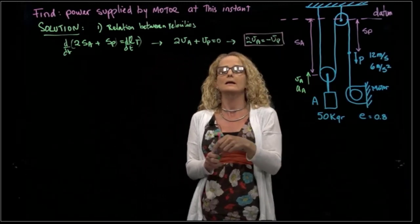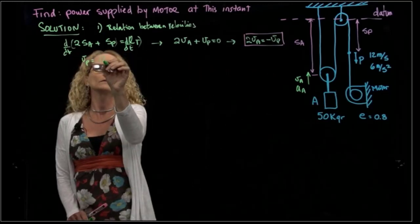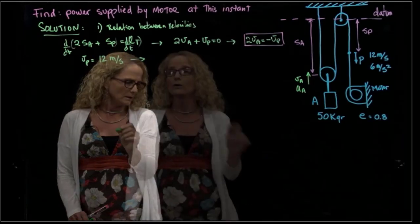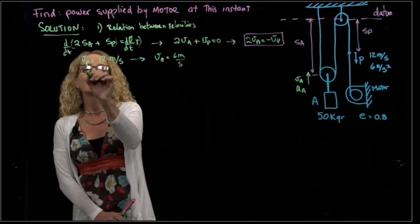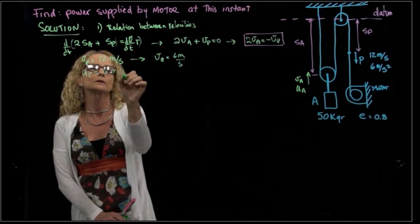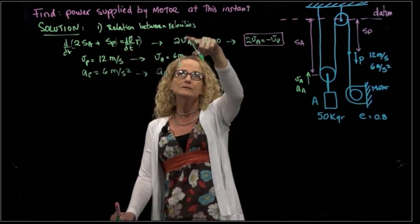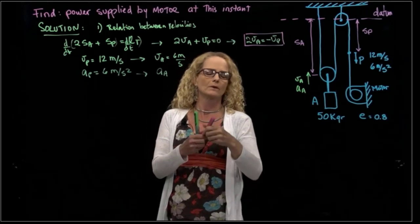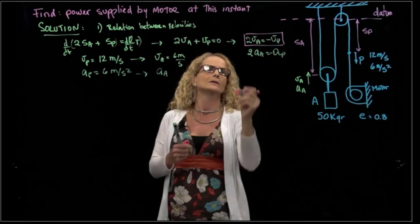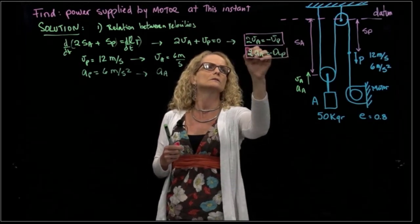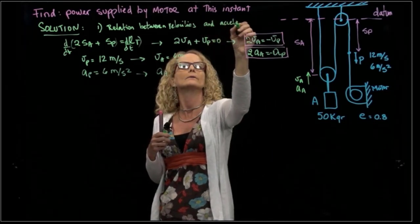So from here, if I have a velocity of P equals 12 meters per second, then the velocity of A will be 6 meters per second. And if I have an acceleration of P equals 6 meters per second squared, I can also derive this equation and get the relations. Let me write that: 2AA equals minus AP. So that's my second relation between velocities and accelerations.